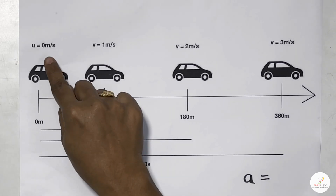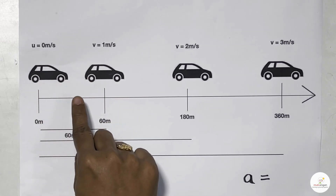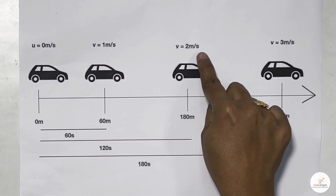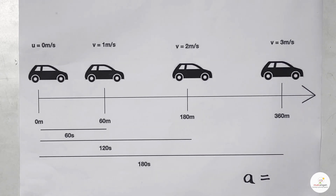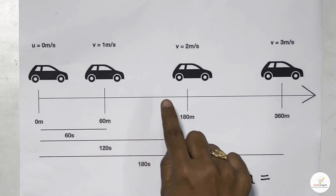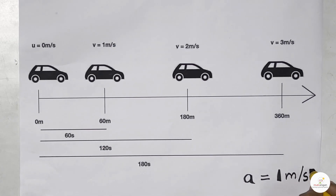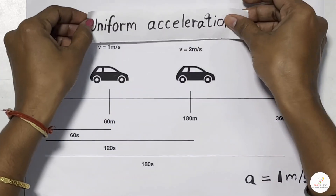The initial velocity of the car is 0 meter per second as it is parked initially. As it starts to move, every second its velocity increases by 1 meter per second and it continues to do so. This shows that the car is moving at constant acceleration — that is, it is moving at the same acceleration, which is A = 1 meter per second squared. Therefore, when a moving body has a constant change in velocity in a given time, it is said to be uniform acceleration.